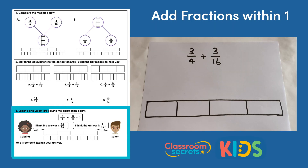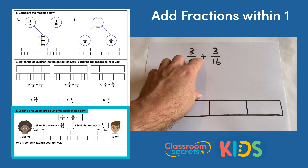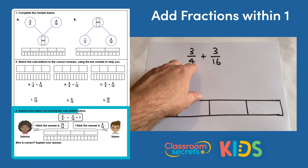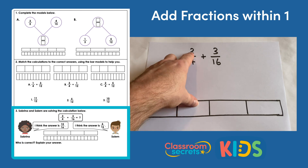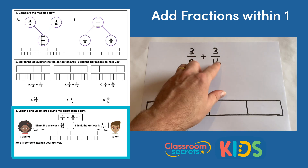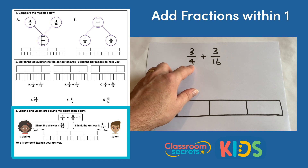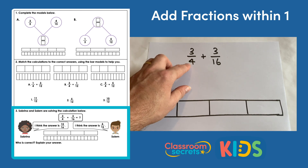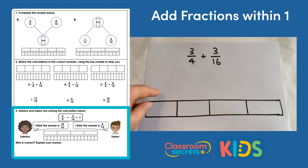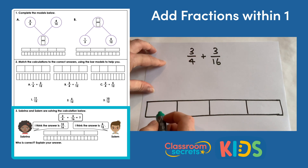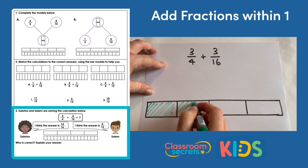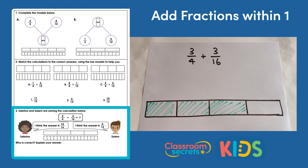Question three says Sabrina and Salem are solving the calculation below: three quarters add three sixteenths. Sabrina is saying the answer is fifteen sixteenths, and Salem is saying the answer is six sixteenths. Who is correct? Explain your answer. We have quarters and sixteenths; sixteen is a multiple of four, so we should be able to convert three quarters into sixteenths. I've got the bar model split into four equal pieces and we're looking at three of those four equal pieces, so I'm shading in three of those four pieces.